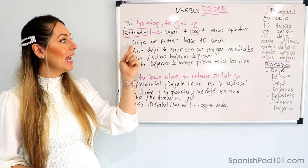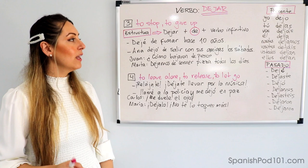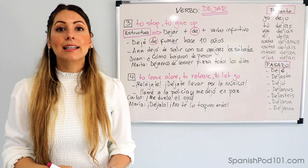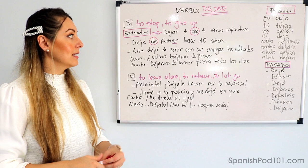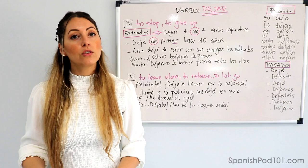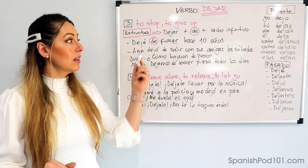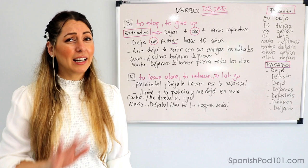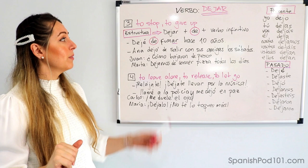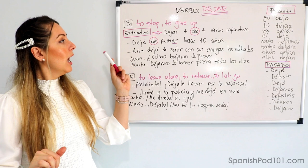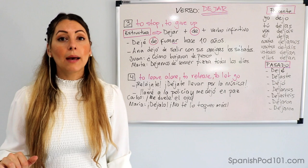Vamos a ver algunos ejemplos. Dejé de fumar hace diez años — I stopped smoking ten years ago. As you can see: dejé is the conjugated verb, de is the preposition, and fumar (ending in -ar) stays in the infinitive. In English we use the -ing form, but not in Spanish. Esta es verdad — I used to smoke before. Definitely the best decision I've made in my life.